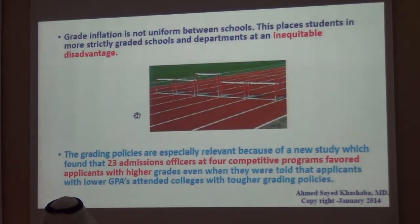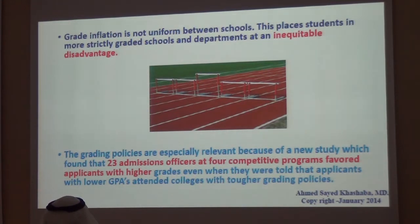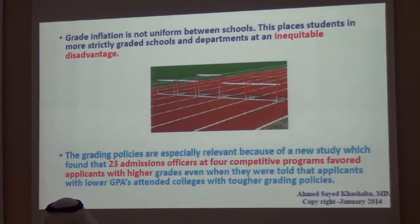Grade inflation is not uniform between schools, which places students in more strictly graded schools and departments at an inequitable disadvantage. For example, if you have a student who graduated from a rigorous grading policy school like Princeton University, and another student from a university like Brown, which has a reputation for easy scoring, these two students have unequal grades, and this can affect them significantly during employment.